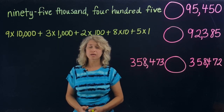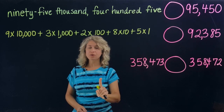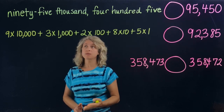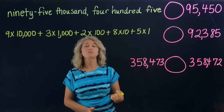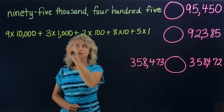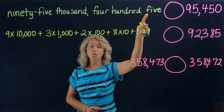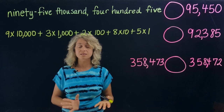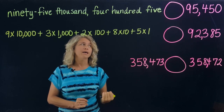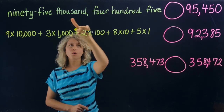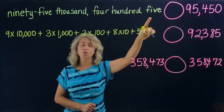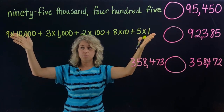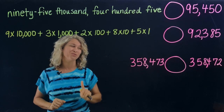Here's another lesson with place value. First you have to be able to read numbers — you need to be able to read them correctly. Then if you can do that, you can write them in word form and at least be able to recognize them in word form, even if you can't spell them correctly. After you are able to write them in word form, then you learn how to do expanded form.